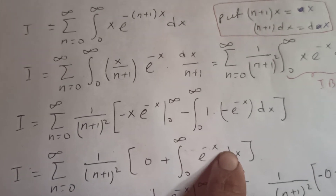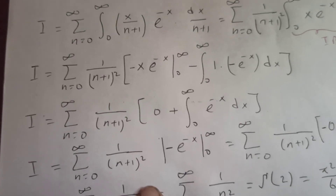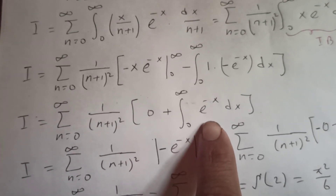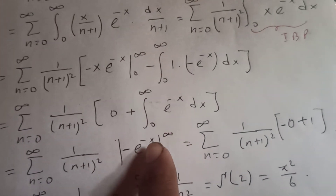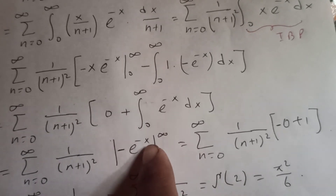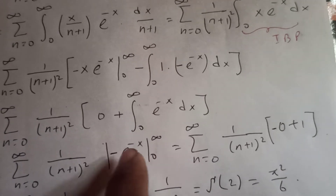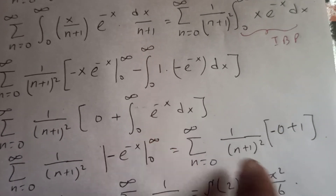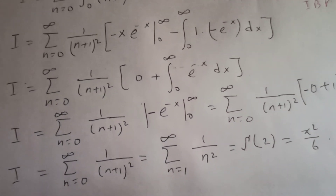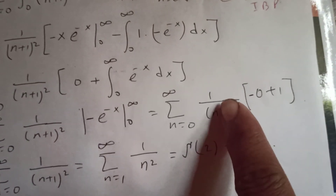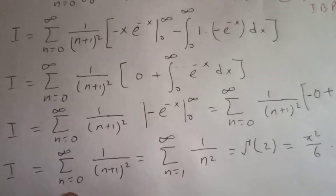The integral of e^(−x) is negative e^(−x). Evaluating: at infinity it is zero, and at x=0 it gives one, because any number to the power zero is one. So we are left with minus zero plus one, which is just one. We get the sum from n equal to 0 to infinity of 1 over (n+1)².